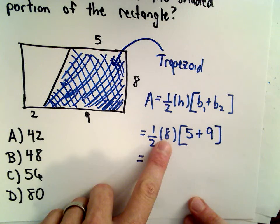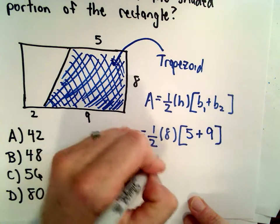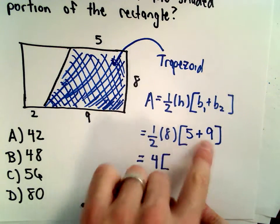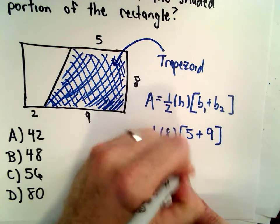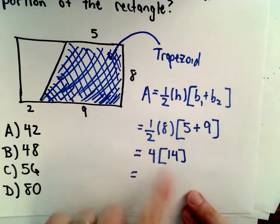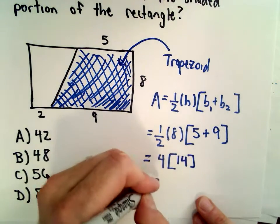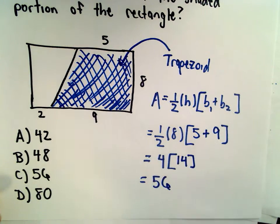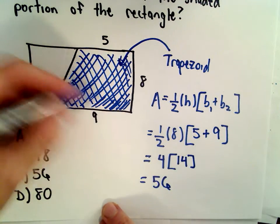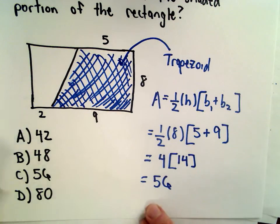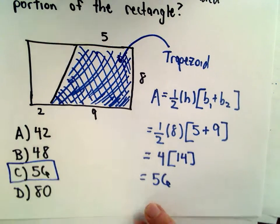So one-half multiplied by 8, that's 4, 5 plus 9, that's 14, and if we take 4 and multiply by 14, that gives us the value 56. So the area of that shaded portion of the rectangle is 56 units.